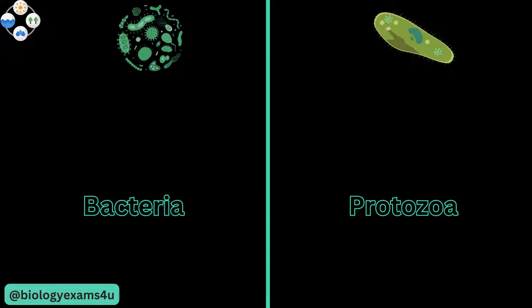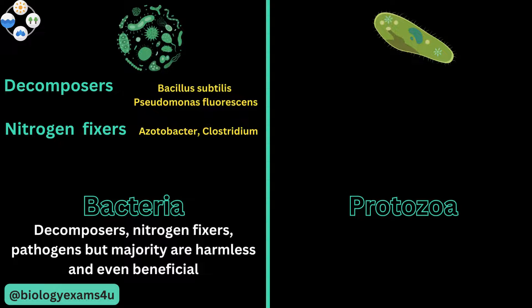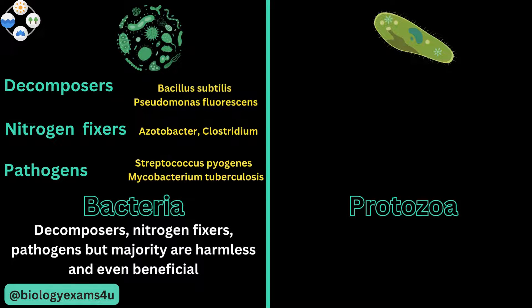Finally, the role of bacteria in an ecosystem: they may be decomposers like Bacillus subtilis and Pseudomonas fluorescens, or nitrogen fixers like Acetobacter and Clostridium. Some are pathogens like Streptococcus pyogenes, which causes strep throat, or Mycobacterium tuberculosis, which causes TB. So they are also of medical importance, causing disease in a wide variety of organisms including humans.